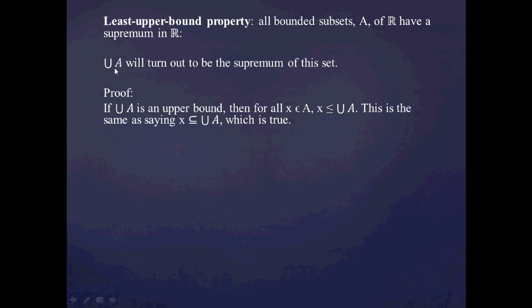The proof requires showing three things: that the union of A is an upper bound, that it's the least upper bound (the supremum), and that it's a real number (a Dedekind cut). For the first statement: if union of A is an upper bound, then for all X in A, X ≤ union of A, which based on our ordering means X ⊆ union of A. This is true by the definition of union of A — all members of members of A are members of some member of A. So we've shown union of A is an upper bound for A.